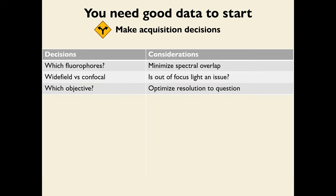You also have to decide which objective lens to use — this defines the resolution of your image. Optimize resolution for your question: if you're looking at subcellular objects, use a high-resolution objective; if you're just checking whether two things are in the nucleus, a lower numerical aperture objective may suffice. You also need to choose which filters to use in front of your detection apparatus to carve up the emission spectrum, again minimizing spectral overlap. In a core facility this is often done for you.